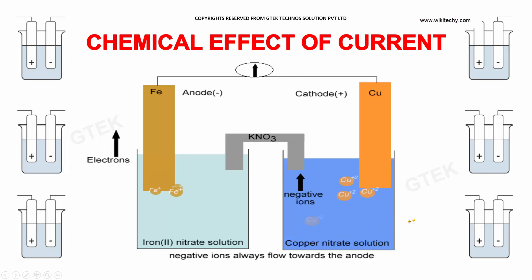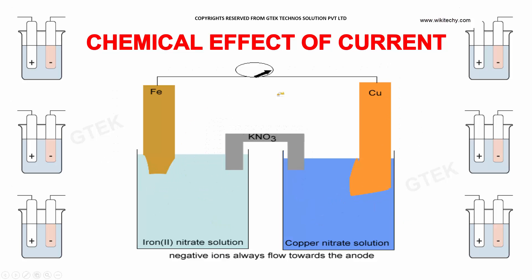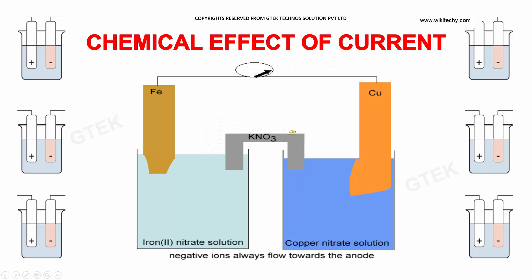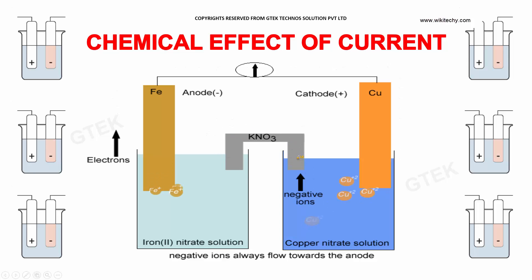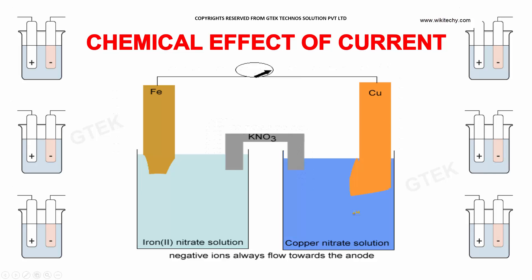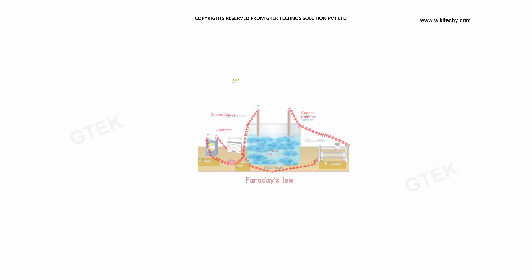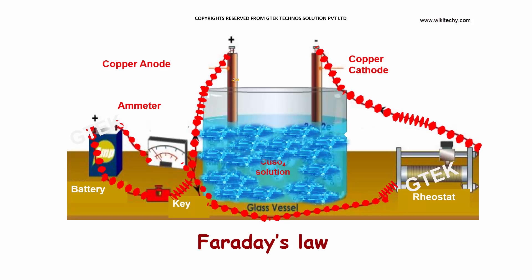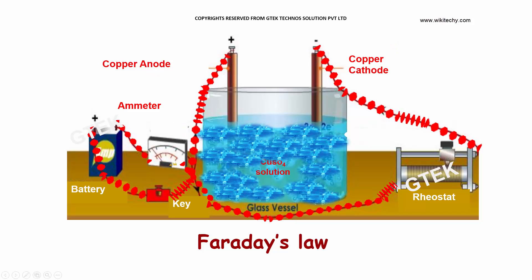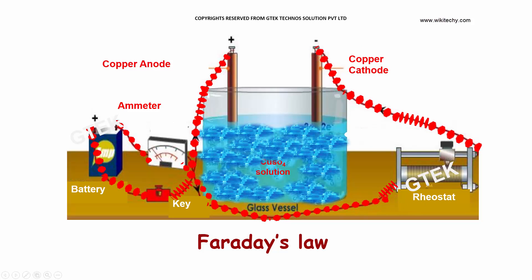Let's talk about the chemical effect of current. You are able to see a circuit which has a cathode and anode, and once a metal or electrode is injected, the ions start navigating — this is considered as the chemical effect of current. You can see the structure, the passage of current, the cathode and anode, and the ammeter which is connected to a battery with a variable resistance.